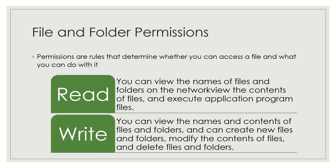The first permission is Read. Basically, it means you can view the names of files and folders on the network, view the contents of files, and execute application program files only — for example, Microsoft Word. When we say Write, you can view the names and contents of files and folders, create new files and folders, modify or edit the contents of files, and you have permission to delete files and folders.